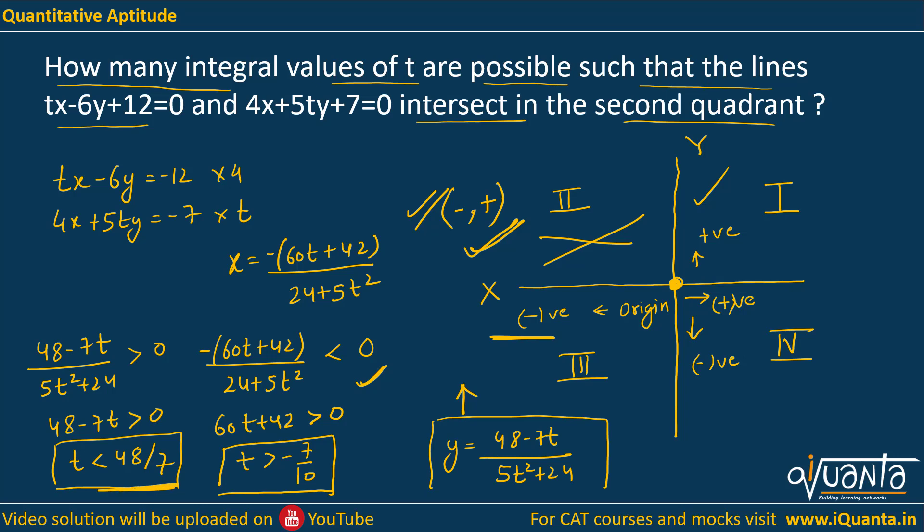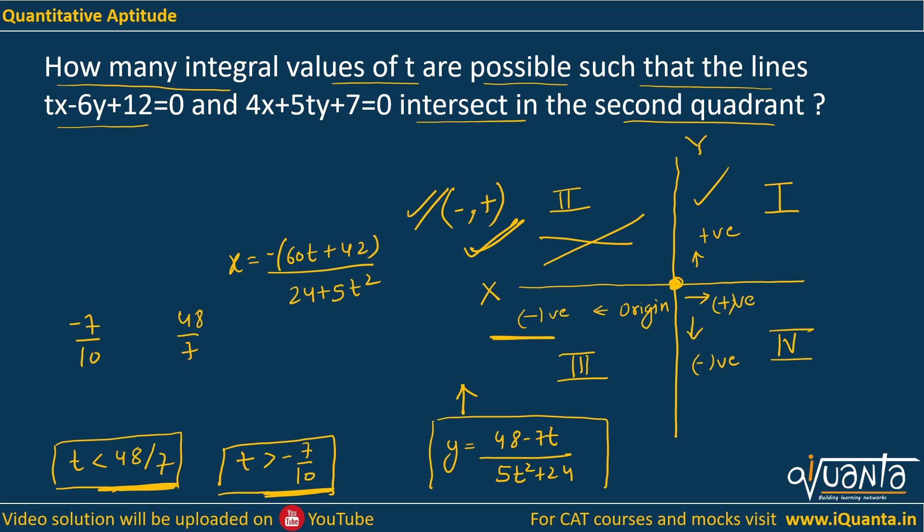Now I know that t should be less than 48/7 and it should be greater than -7/10. So all the integer values that are falling within this range will be the answer. Let us count them. From -7/10 till 48/7, all the integer values that will fall in this range.